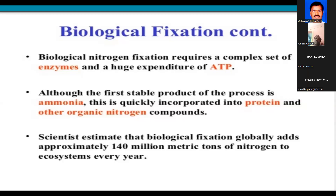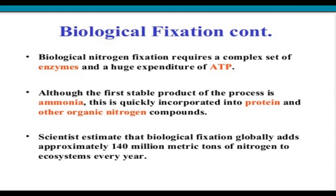Biological nitrogen fixation is a process by which nitrogen is fixed in plants with the help of certain aerobic bacteria. Biological nitrogen fixation was first discovered by a Dutch microbiologist. In 1901, certain organisms like prokaryotes — such as bacteria and cyanobacteria — can fix atmospheric nitrogen, converting N2, molecular nitrogen, into a chemical form which plants and microbes can use for growth.